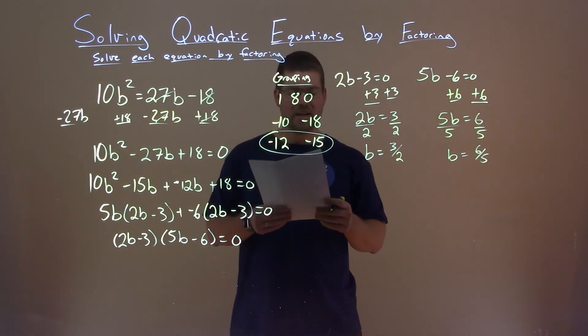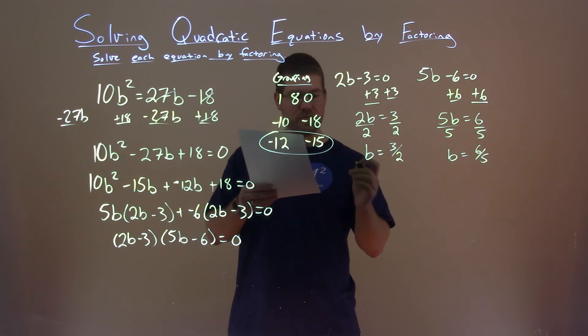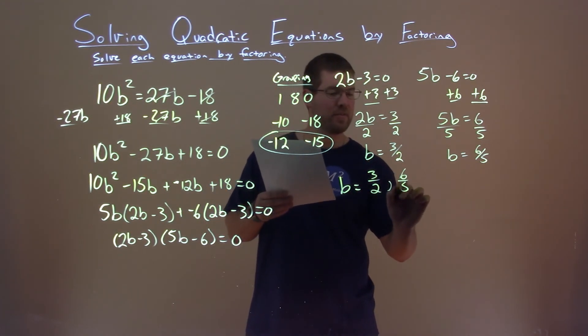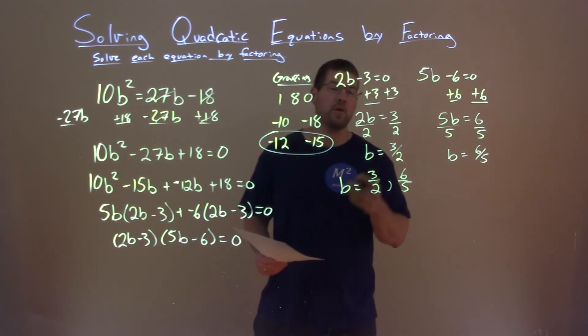And so we actually have our two answers we can combine as one here. B equals 3 halves and 6 fifths, and that is our final answer.